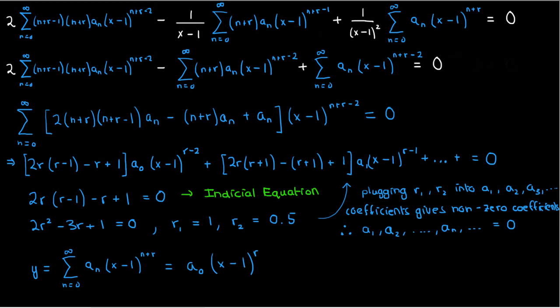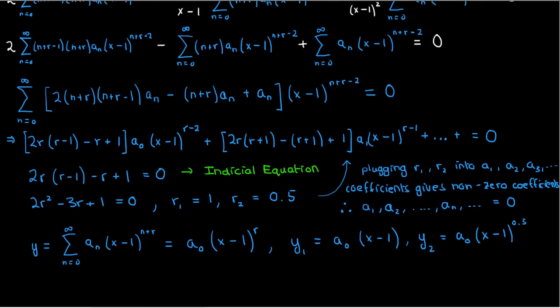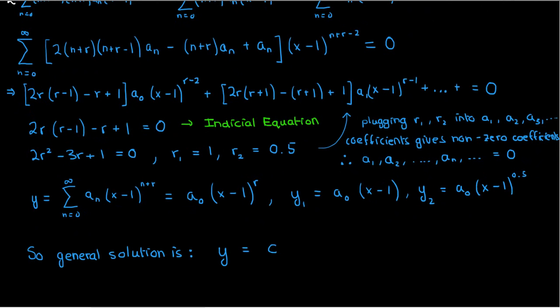What does this mean for our final answer? Well, if we take our y(x) from earlier, then only the first term, the term corresponding to n = 0, will be there, since everything else is just 0, so our y(x) will just be a₀(x-1)^r. Because there's two values of r, that means we'll have one solution be y₁ = a₀(x-1), and the other solution be y₂ = a₀(x-1)^0.5. So the general solution to this ODE will just be a linear combination of these two individual basis solutions. And there you have it. That's the solution to the ODE in our example.